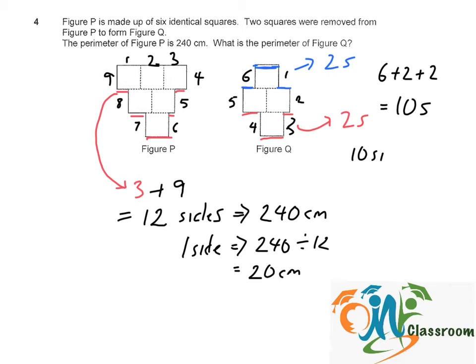So 10 sides will give us a perimeter of 10 times 20 cm equals 200 cm.